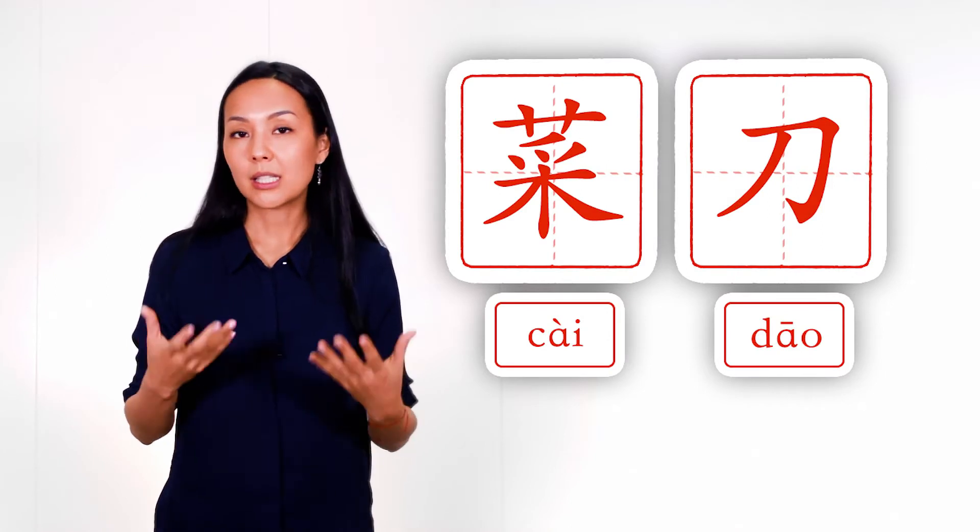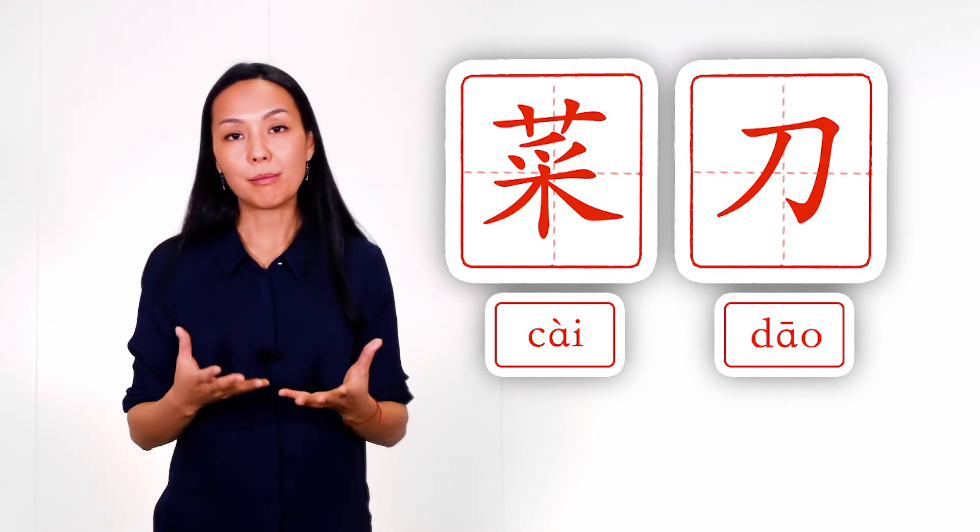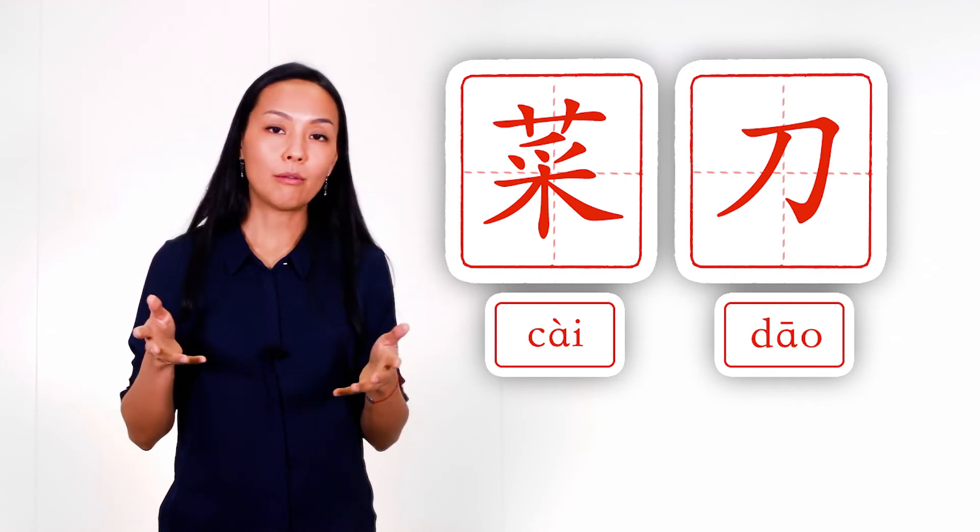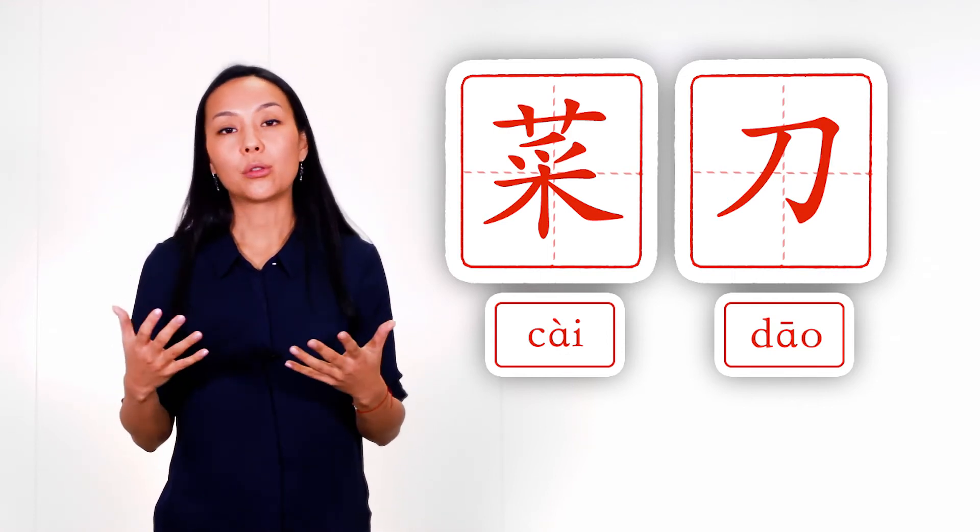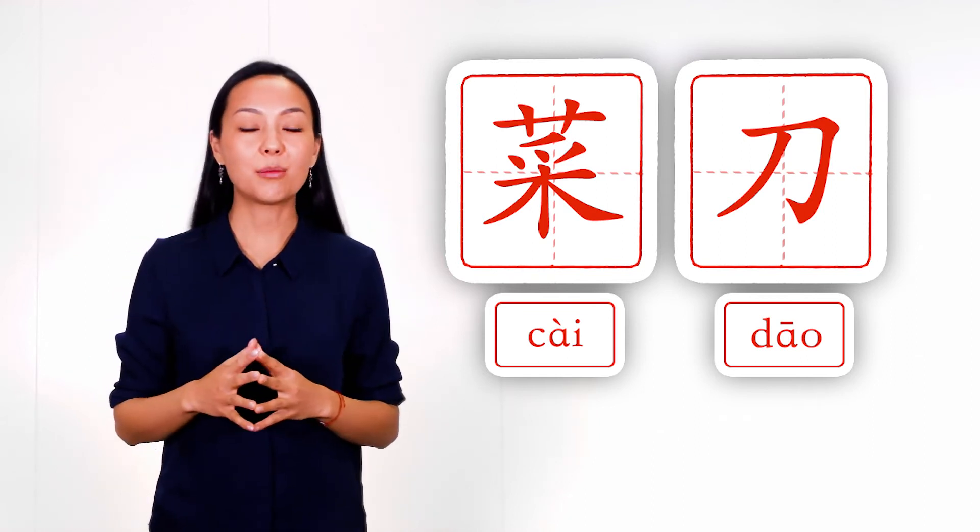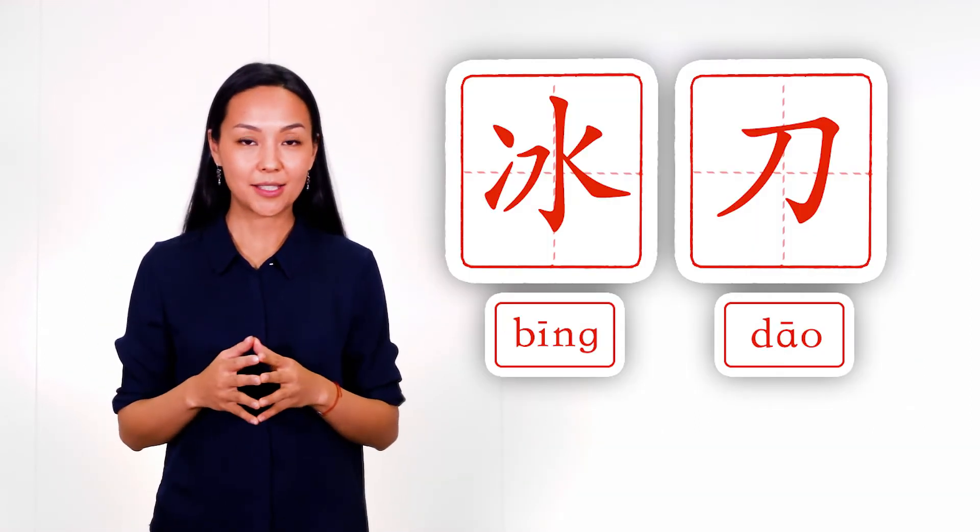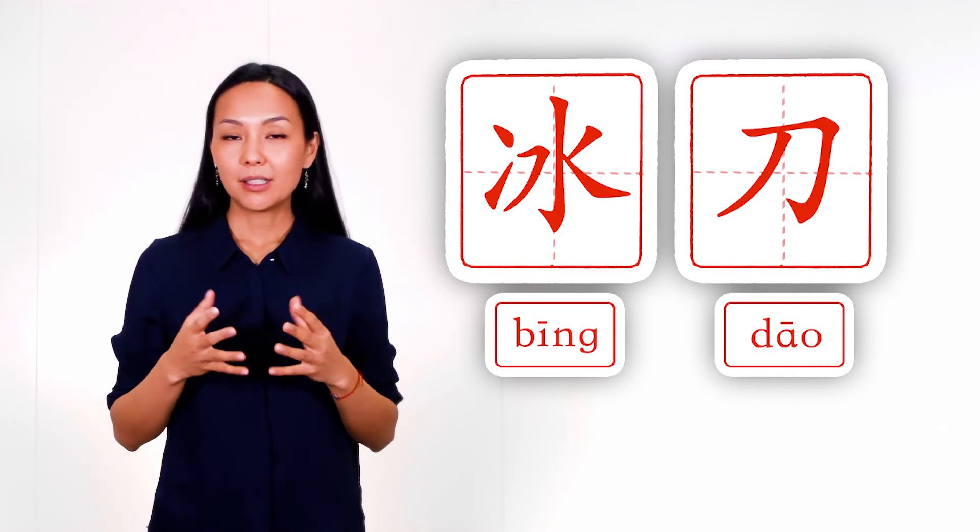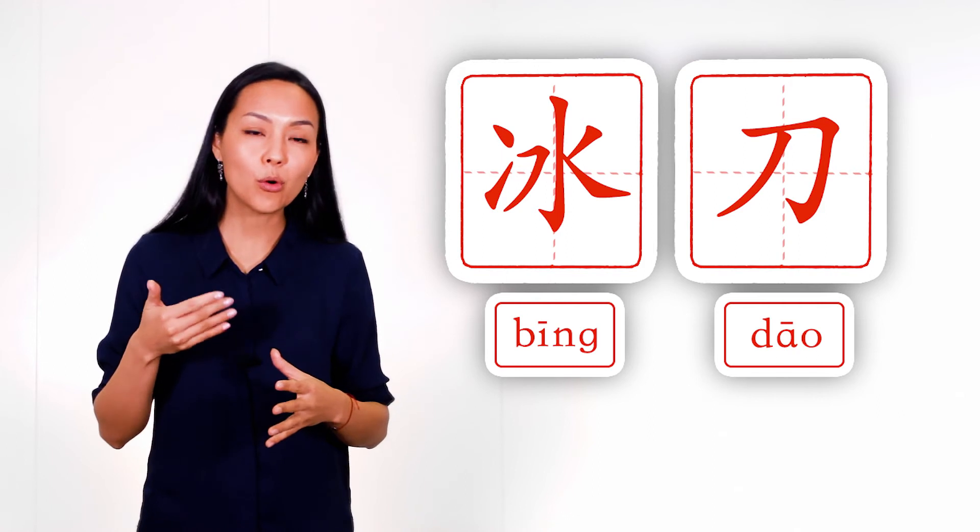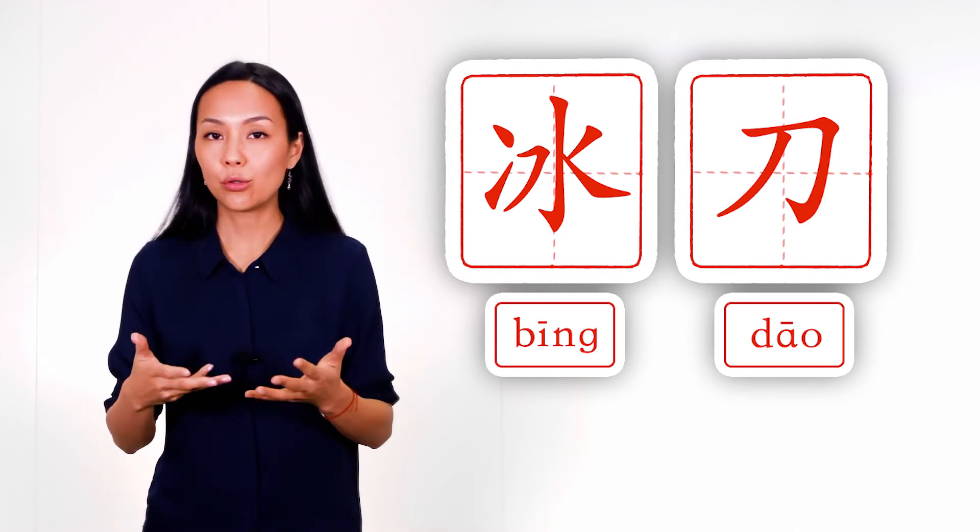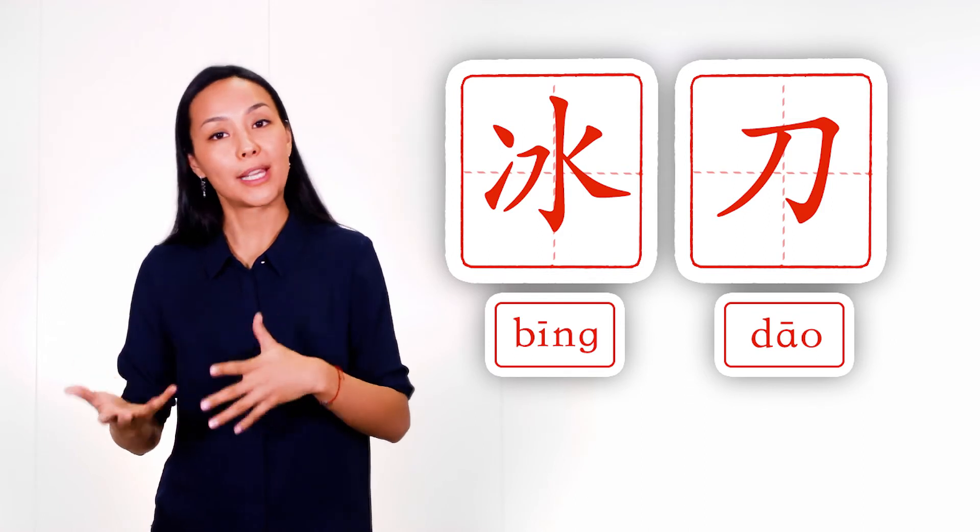And now let's study examples in which knife is used as a separate word. The first example is kitchen knife. So knife is used to cut vegetables to cook something. And the second example is very interesting: ice skates. So in this case knife more means blade. So shoes which we use for ice with blades.